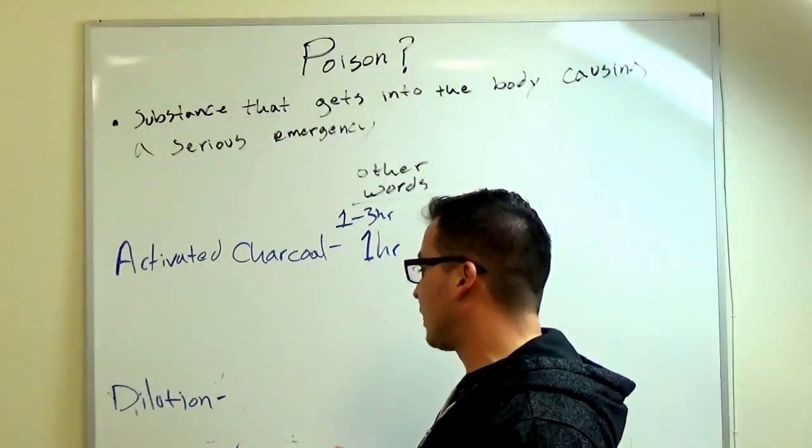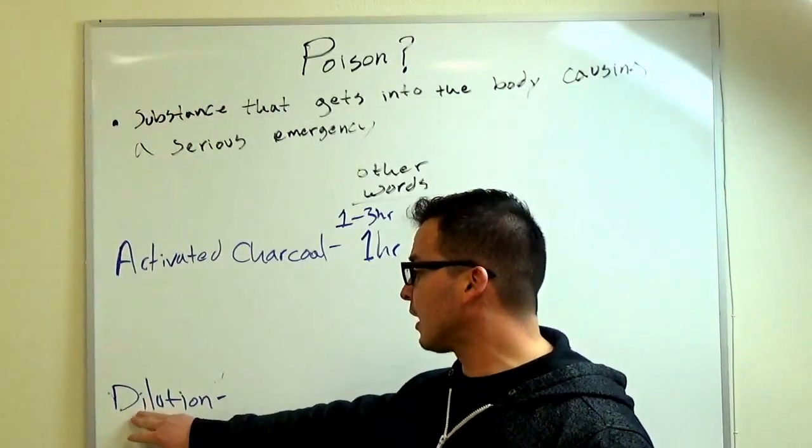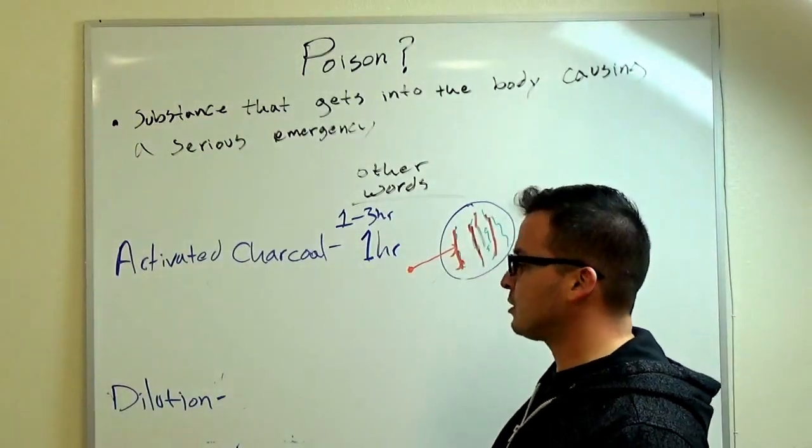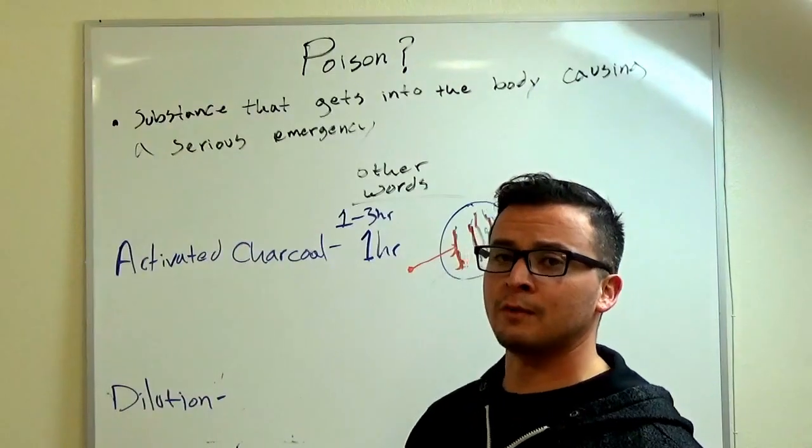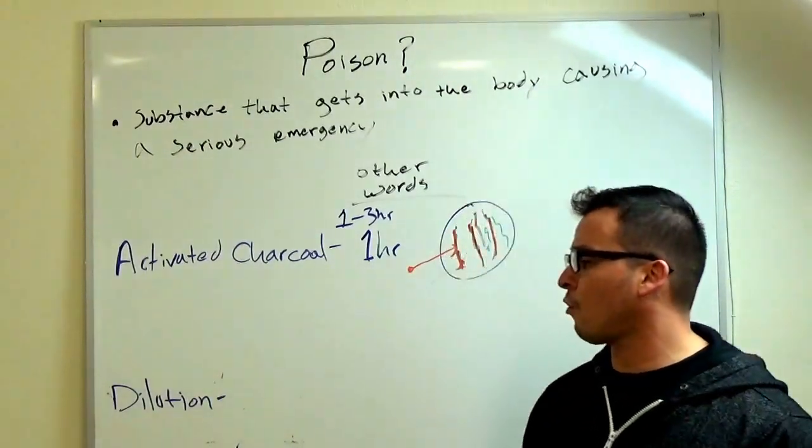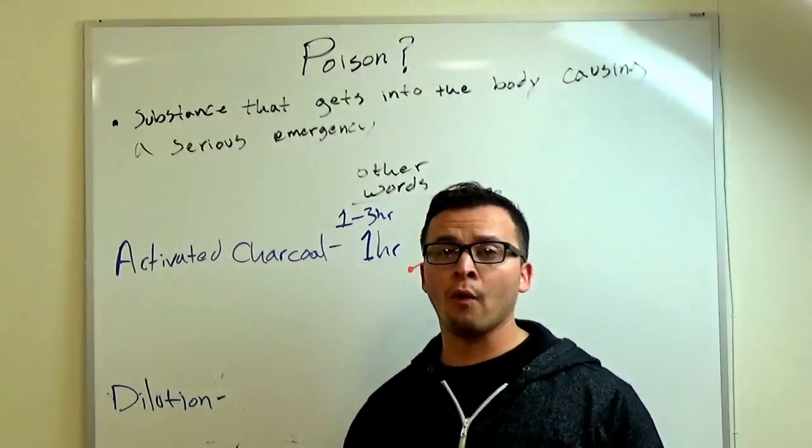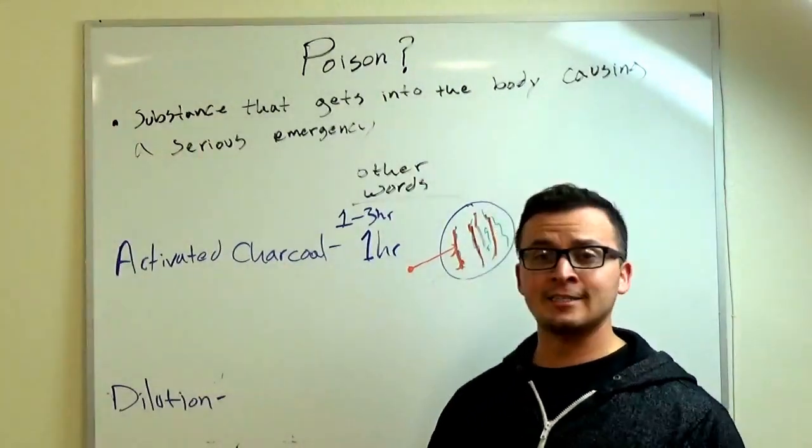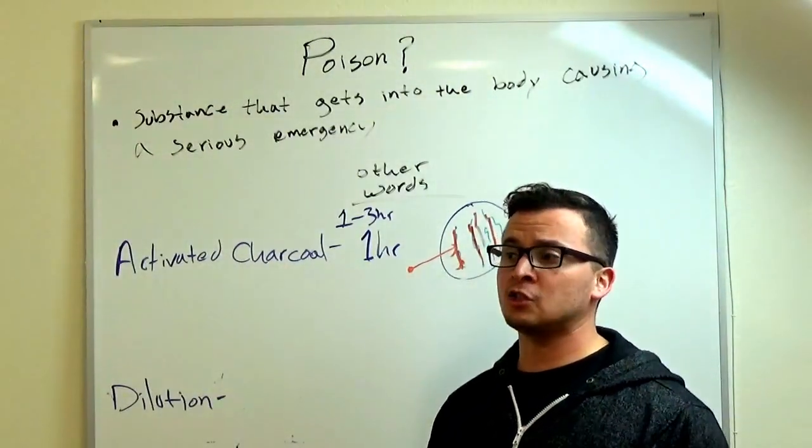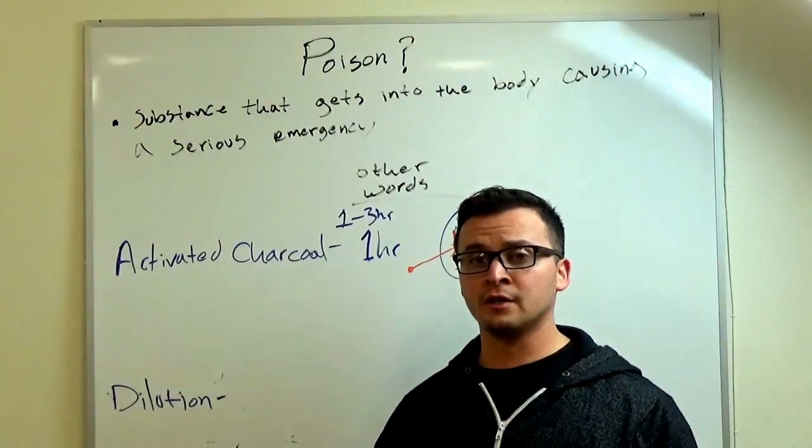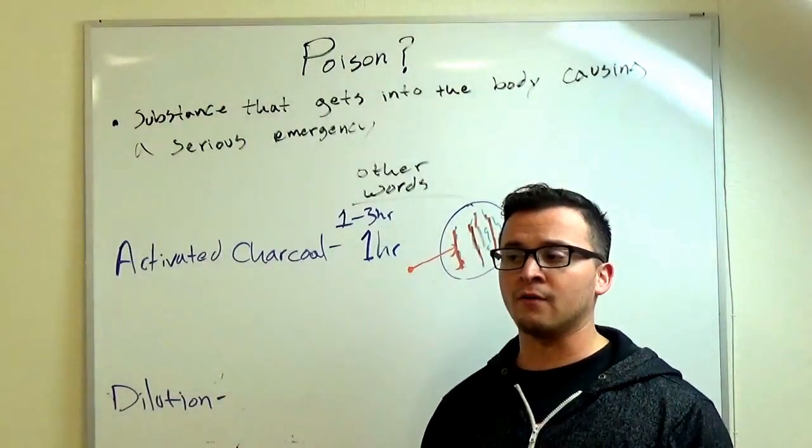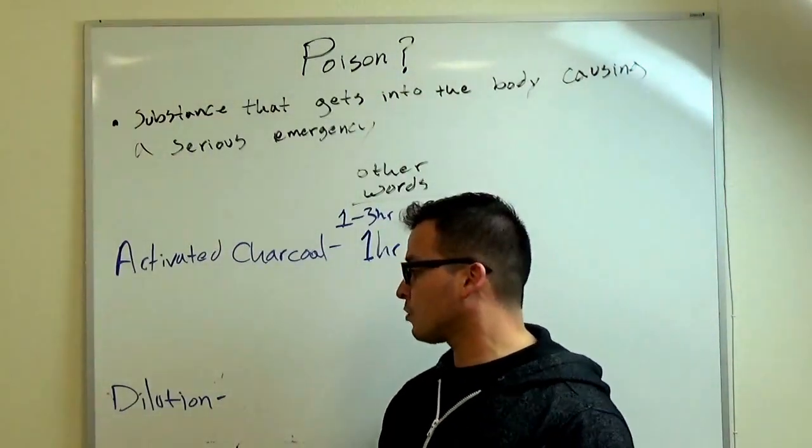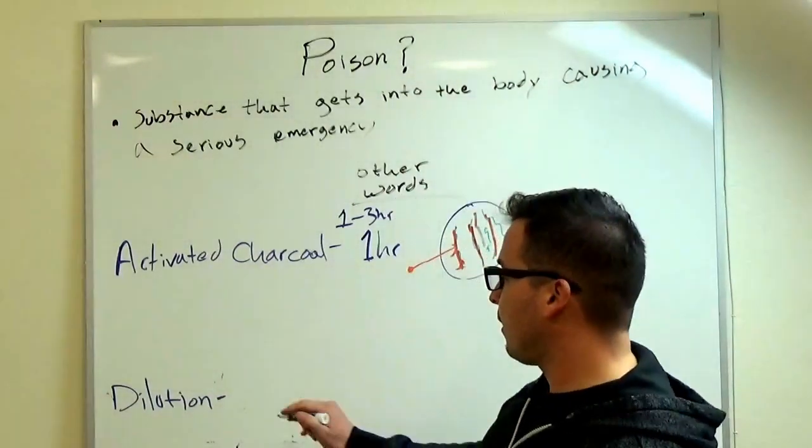Dilution: This is something that doctors sometimes recommend for the person that ingested a poison. If they ingested the poison, they're recommended to drink quite a bit of water. They might give you a certain number of cups or milk, and it depends on the substance.